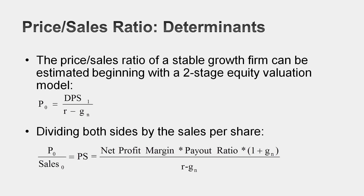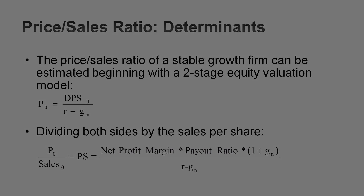The four variables are: the cost of equity, the expected growth rate, and the payout ratio — those three are constants we've seen with price-to-earnings and price-to-book — but there's a fourth variable, which is the net profit margin. Companies with high net profit margin will tend to trade at high price-to-sales ratios; companies with low net profit margins will trade at low price-to-sales ratios. The companion variable for price-to-sales is net profit margin.